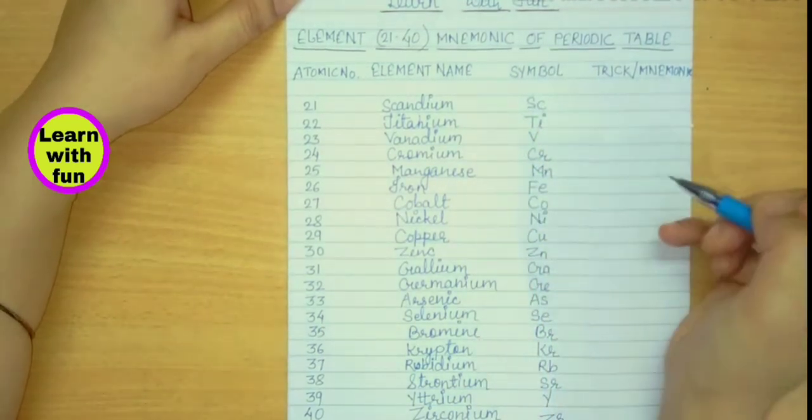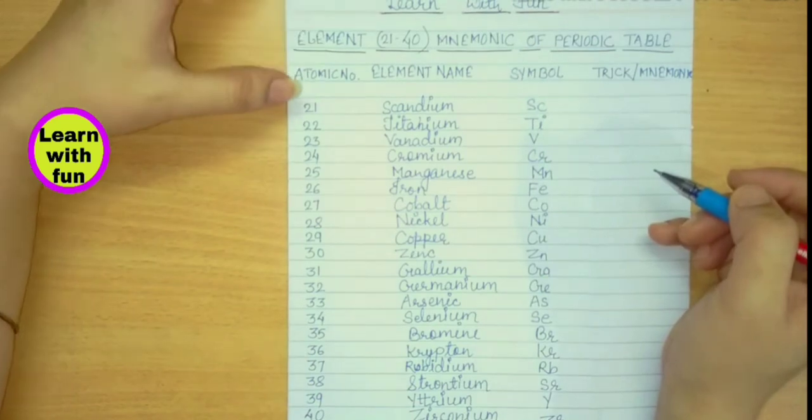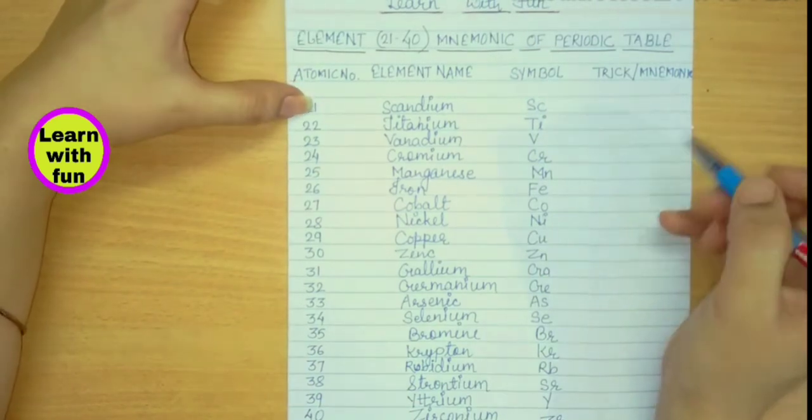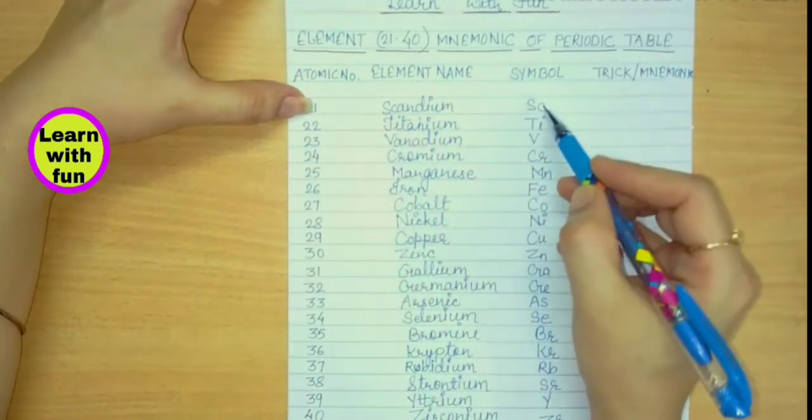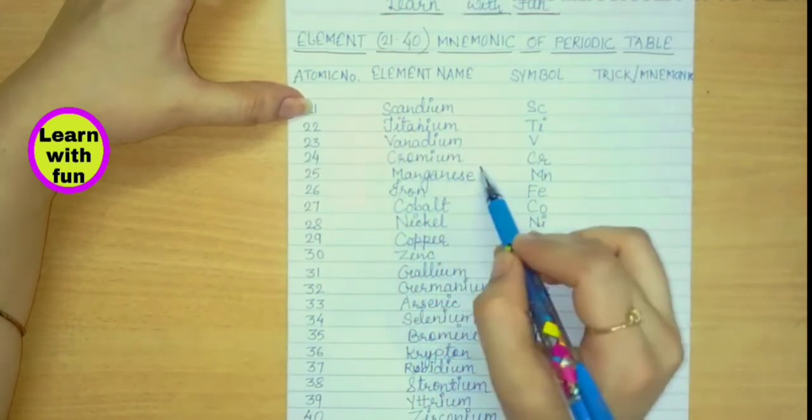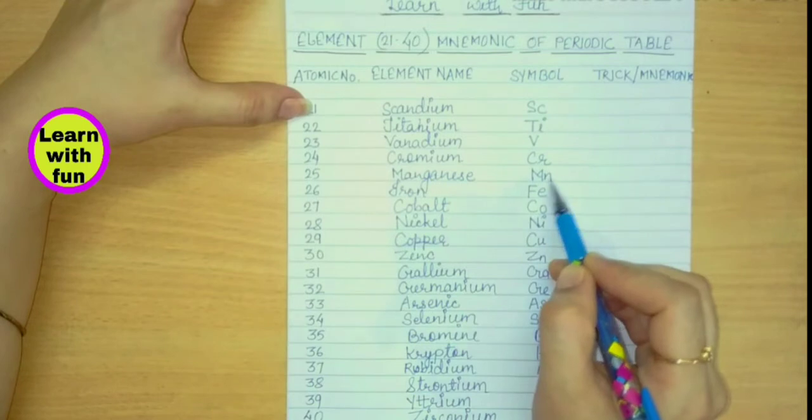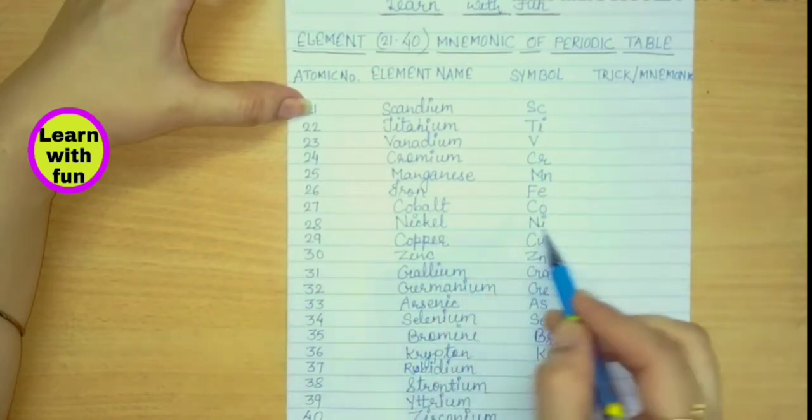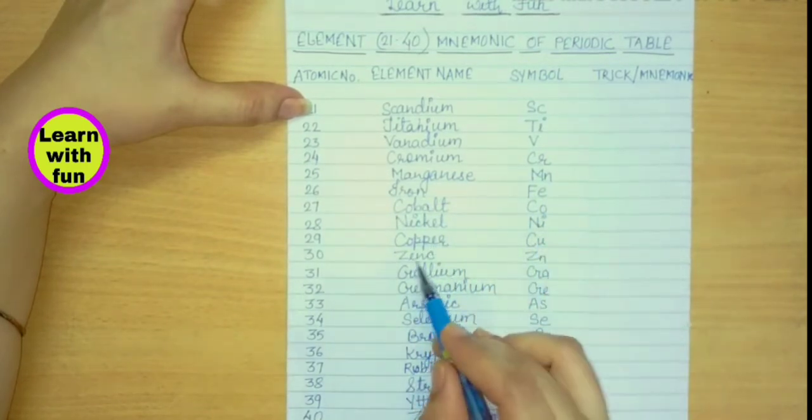So let's start. Atomic number 21, name is Scandium, symbol Sc. Titanium Ti, Vanadium V, Chromium Cr, Manganese Mn, Iron Fe, Cobalt Co, Nickel Ni, Copper Cu, Zinc Zn.